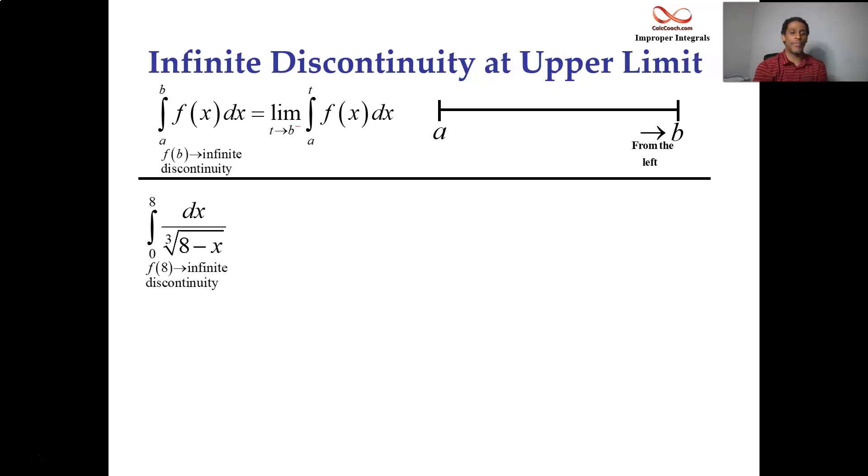All right, great. So here's our example for this one. 8 minus x is underneath a cube root in the denominator. So when x equals 8, you're going to have division by zero, not allowed. And look at the upper limit, it's an 8. Rip out the 8, put in a t. Let t approach 8 from the left. So we're talking about having 8 minus x to the negative 1 3rd.